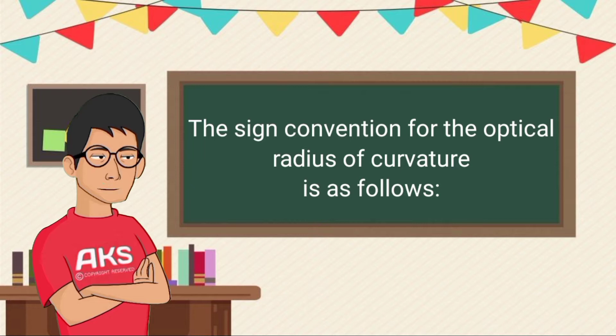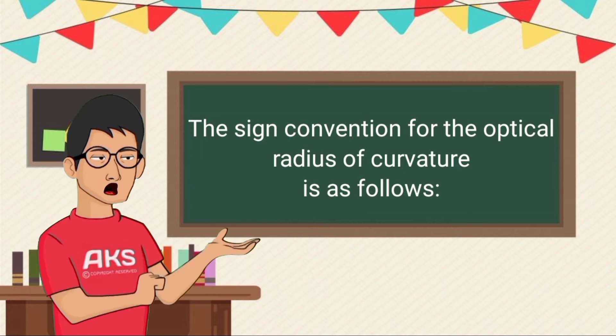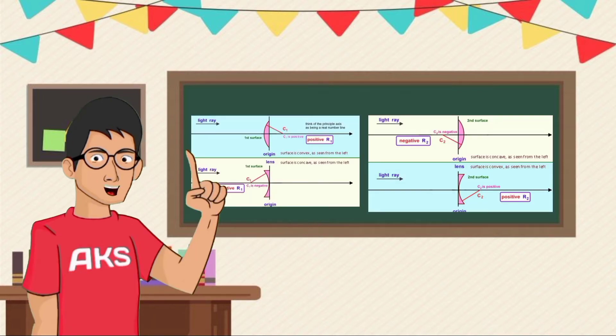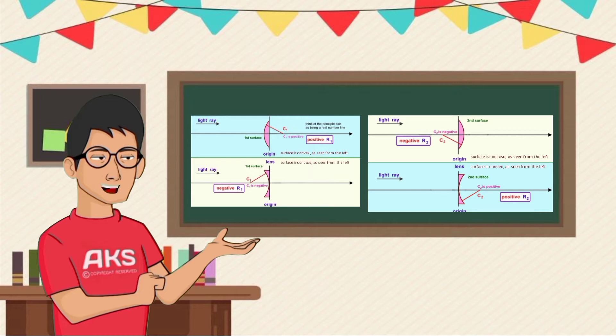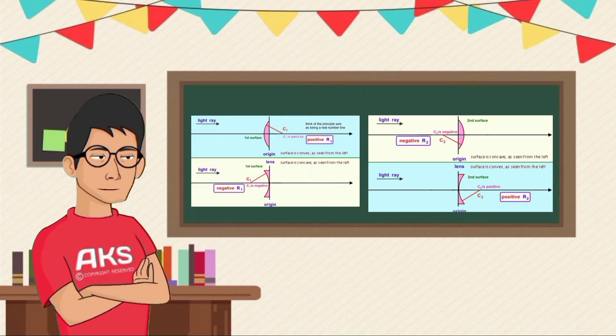The sign convention for the optical radius of curvature is as follows. If the vertex lies to the left of the center of curvature, the radius of curvature is positive. If the vertex lies to the right of the center of curvature, the radius of curvature is negative.